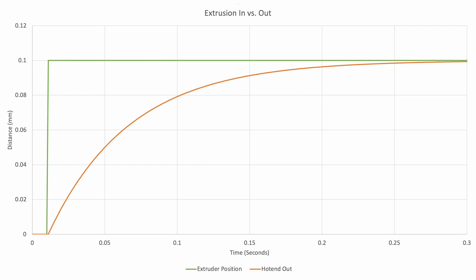So at the beginning the extruder position jumps up by 0.1 millimeters and stays there, and then the plastic equivalent distance that has gone out of the hotend gradually increases until it reaches a steady state where once these two lines meet, there is no force being exerted on that melted plastic so none should ooze out.